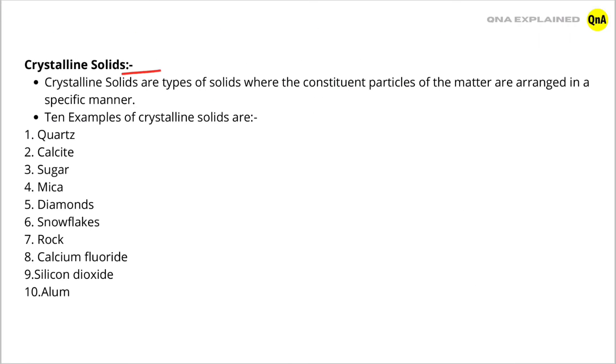Crystalline solids. Crystalline solids are types of solids where the constituent particles of the matter are arranged in a specific manner.